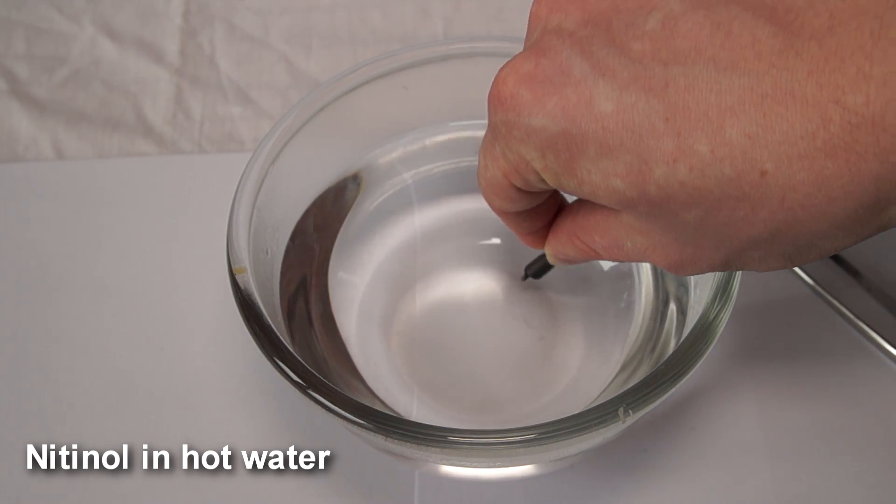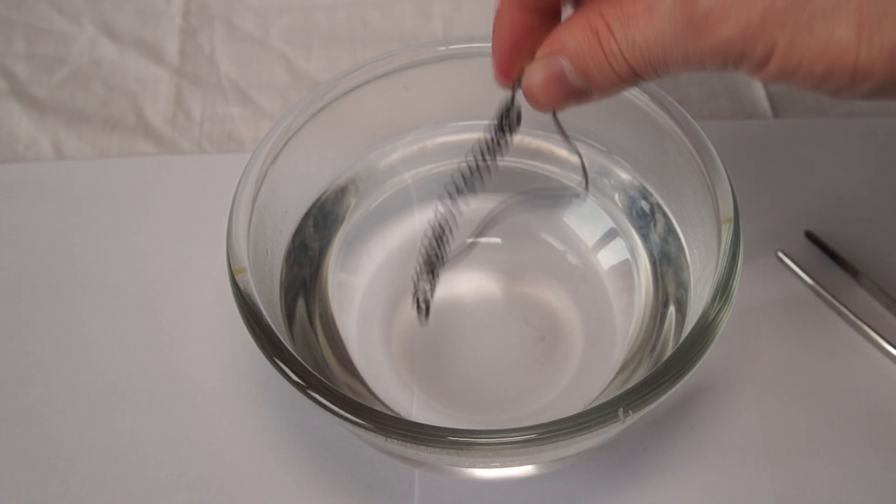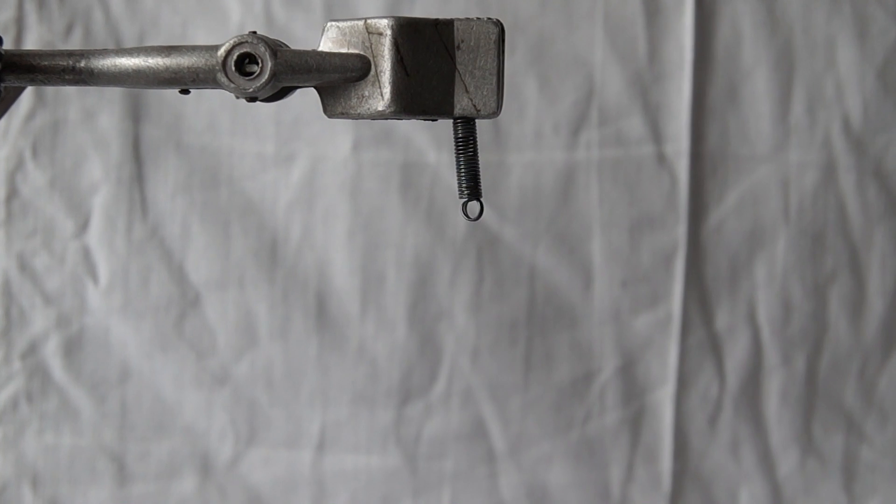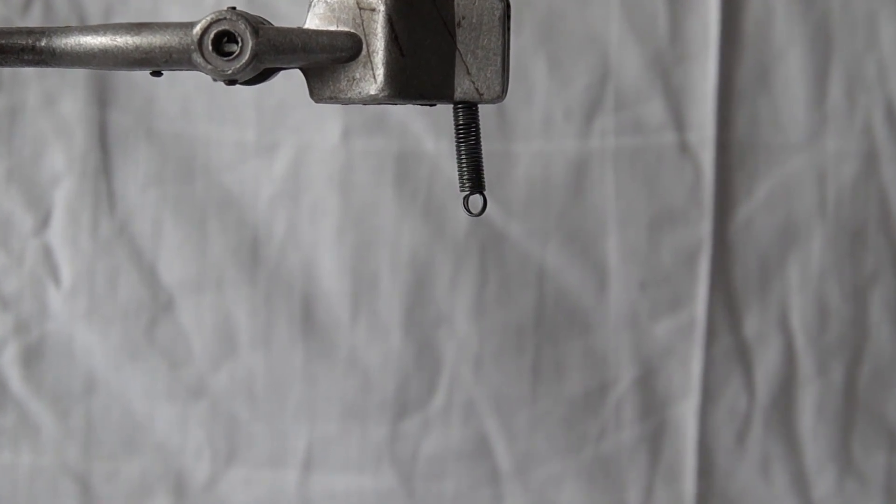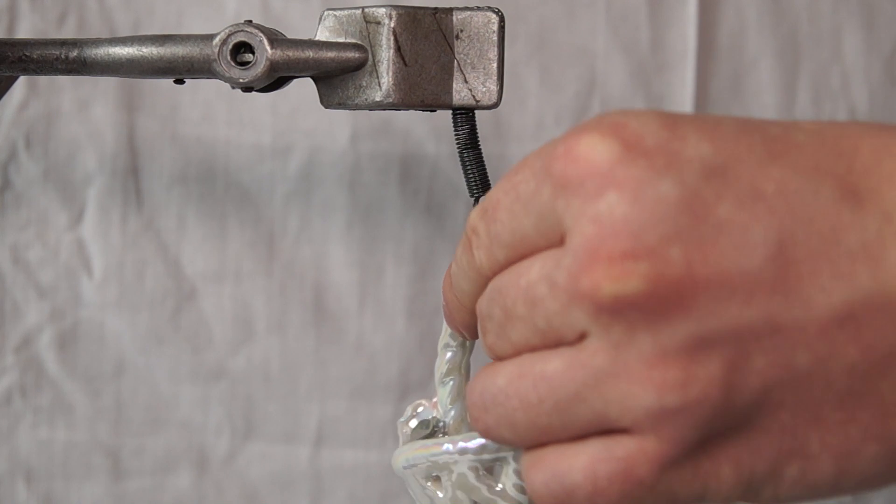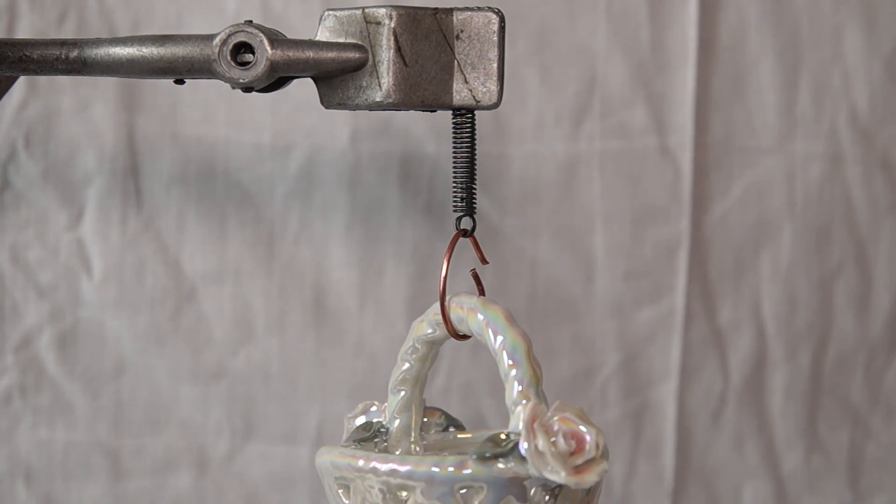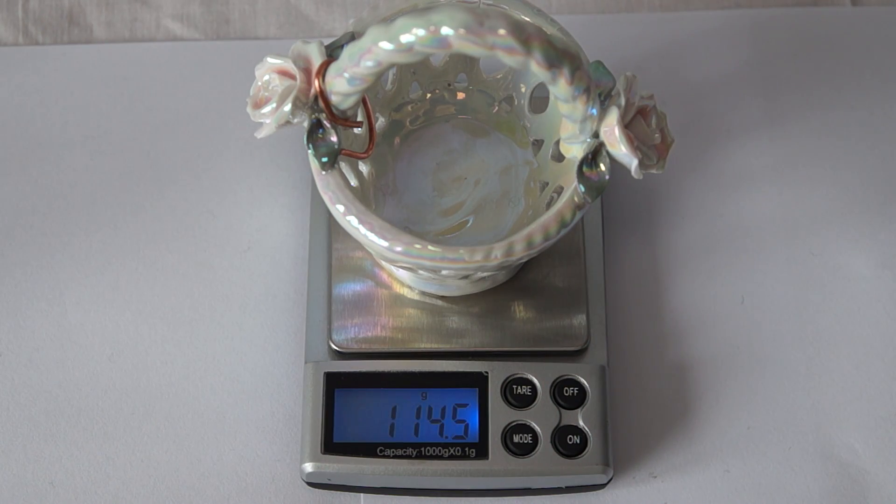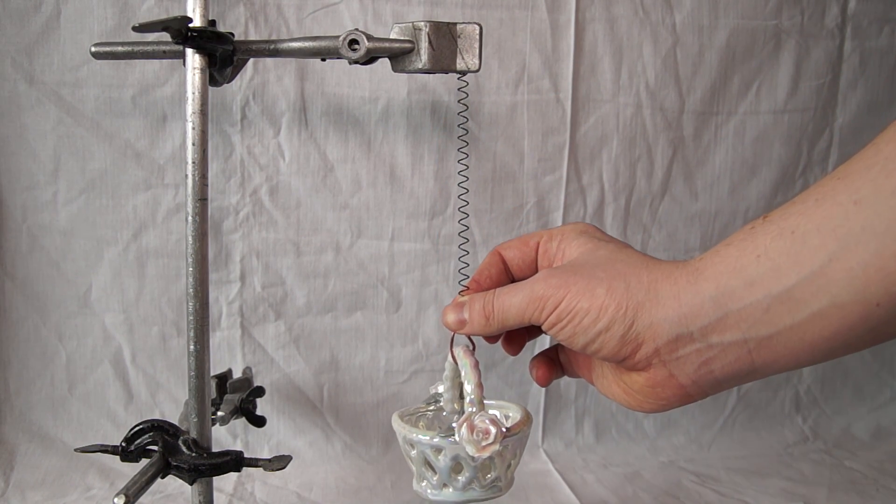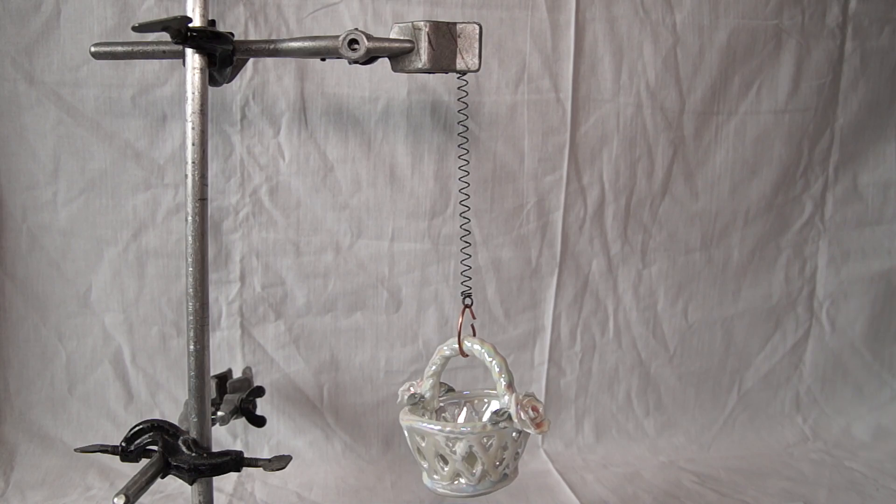While nitinol restores the shape, it can also do some work. Let's see what kind of work a small spring of nitinol can make. I have attached the spring to a tripod and hung a porcelain basket onto it which weighs 180 grams. Next we stretch the spring. For the spring to return again, I'll heat it with a lighter.